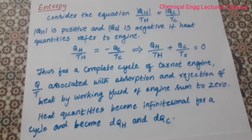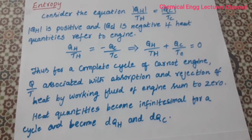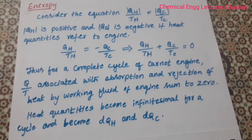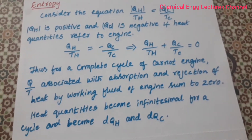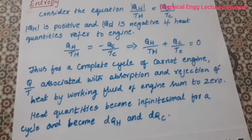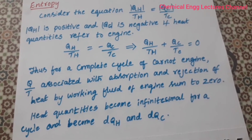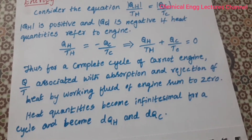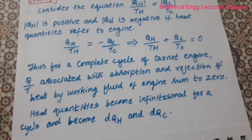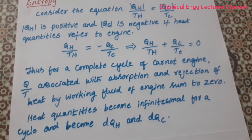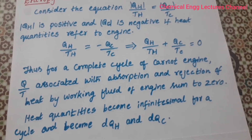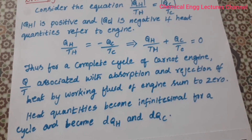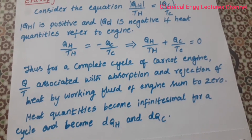Consider the equation QH by TH is equal to QC by TC. Here the modulus symbol indicates whether it is positive or negative. QH is positive and QC is negative if heat quantities refer to the engine. So QH by TH is equal to minus QC by TC, which gives QH by TH plus QC by TC is equal to 0.